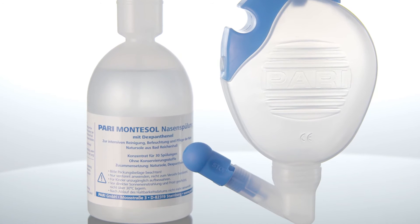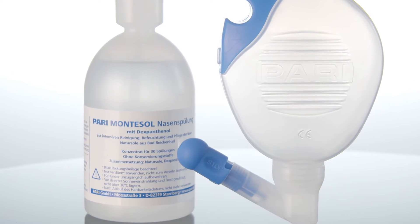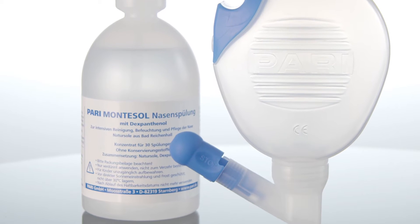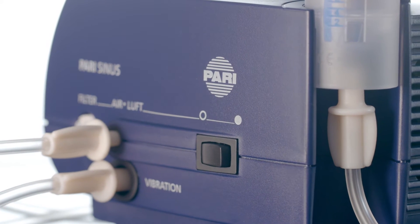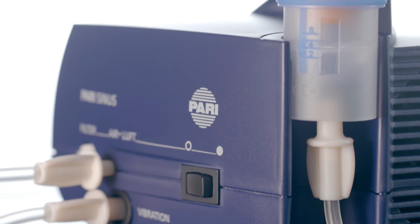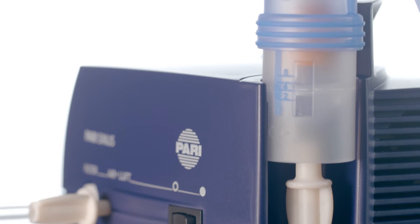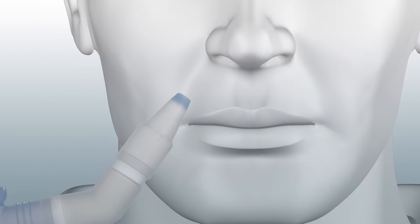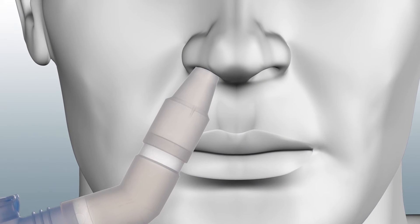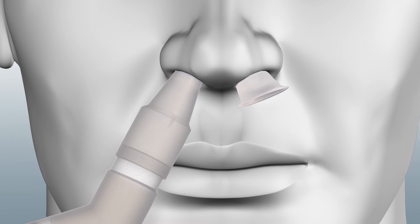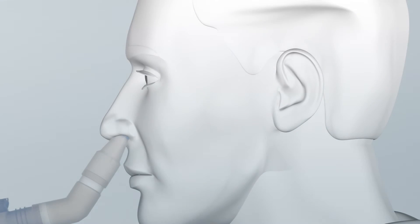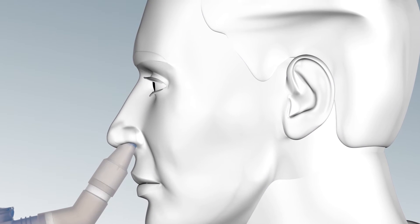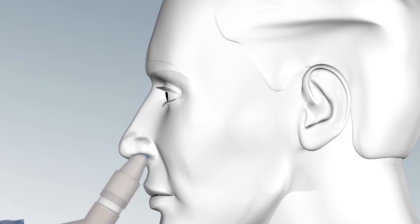A nasal rinse such as Paris Montisol should be used prior to starting therapy with the Paris Sinus. Once your nose is clear, the therapy can begin. Start by inserting the nebulizer just inside one nostril, and then insert the nasal plug provided into the other nostril in order to ensure that the saline or medication is able to reach your sinuses.